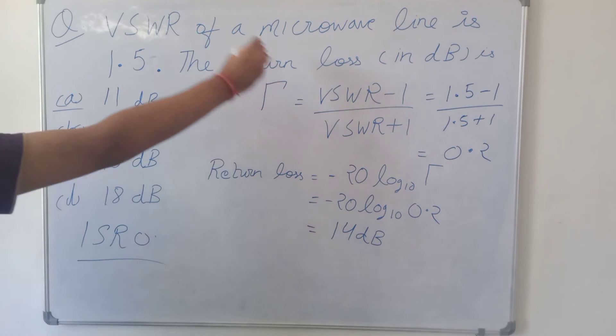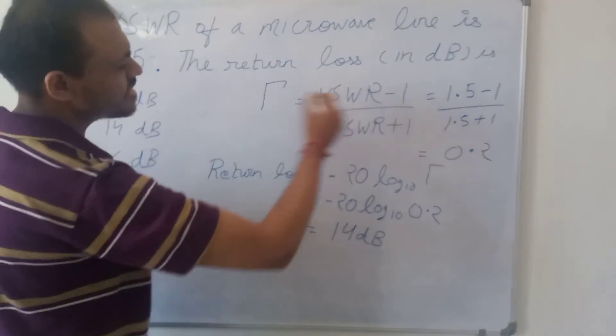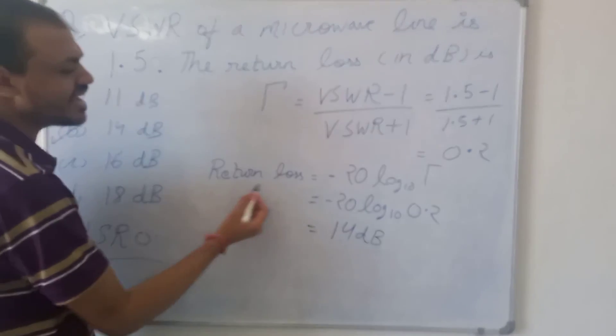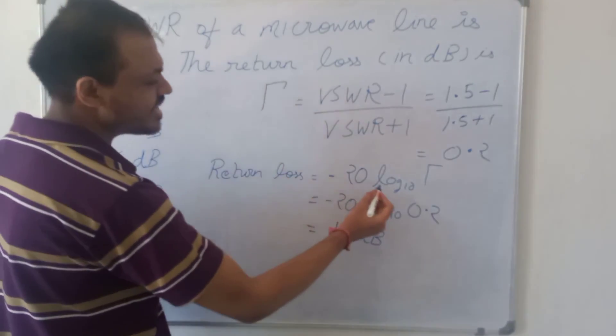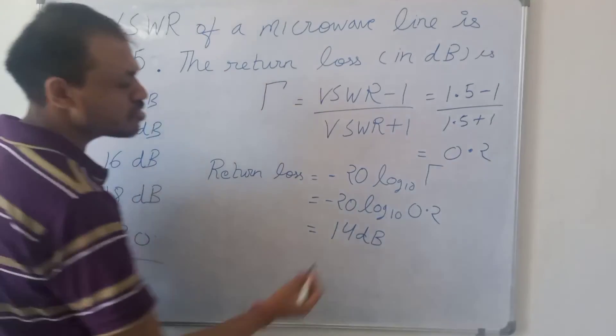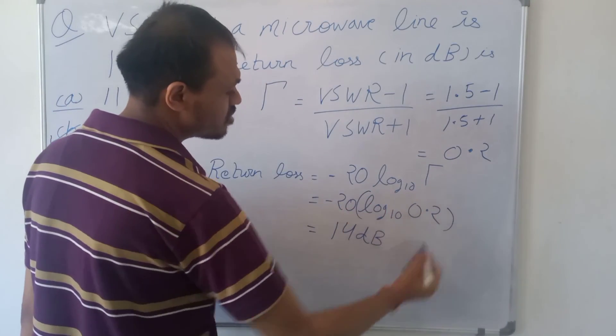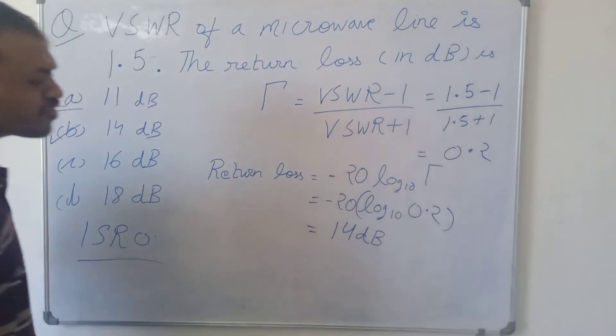To calculate the return loss from VSWR, first calculate the reflection coefficient. Then return loss is minus 20 log base 10 of the reflection coefficient. So minus 20 times log base 10 of 0.2 gives 14 dB.